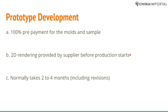For prototype development, you are expected to pay 100% upfront for the mold and the sample. A 2D rendering should be provided by the supplier before production starts — it confirms they understand your spec sheet, and is much easier to correct than a real sample. Development time is about 2 months for the first revision, and 2 to 4 weeks for every consecutive revision. You should estimate 2 to 3 revisions, so overall 2 to 4 months — though new or complex designs can take 6 months or more.